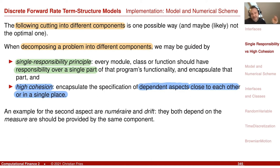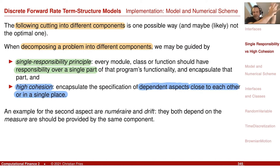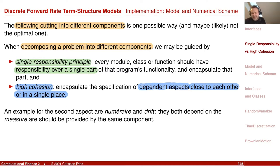When we specify the numéraire, we specify our equivalent martingale measure, and that determines the drift. Consider your computer program having one part that calculates the numéraire — where you decide whether to choose spot measure or terminal measure — and another separate part that calculates the drift. But these two parts have to be consistent. So actually they should maybe be in the same place, such that it's not possible to create the wrong drift for some numéraire.